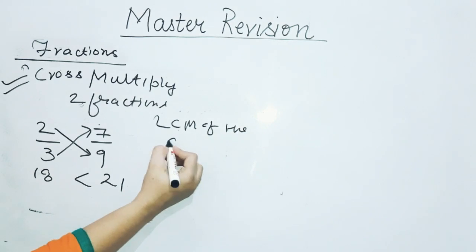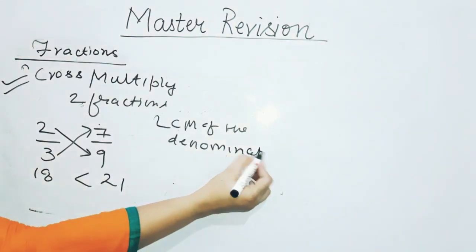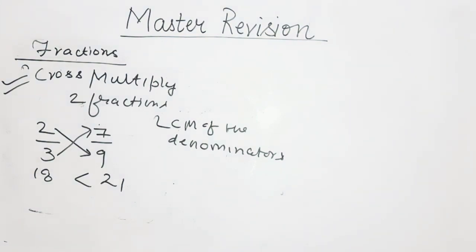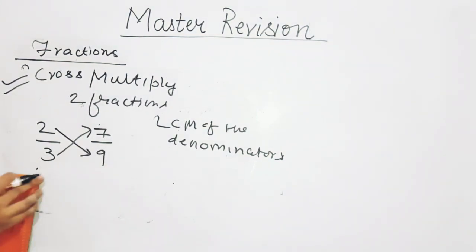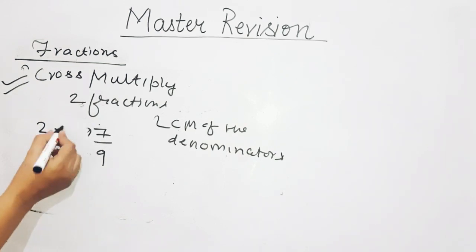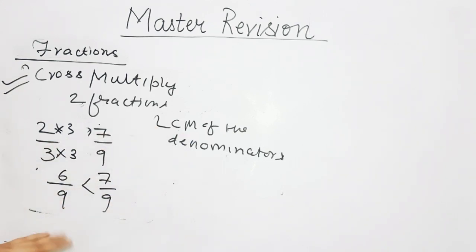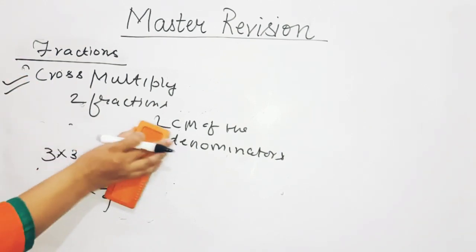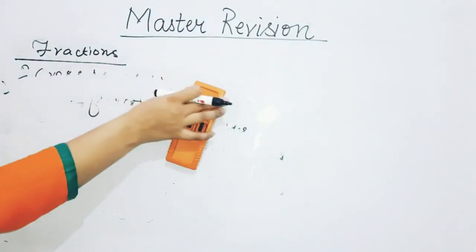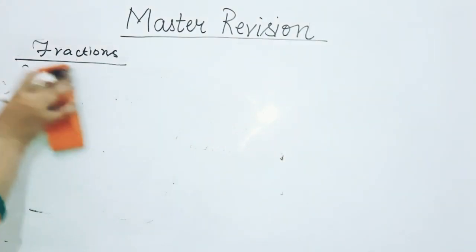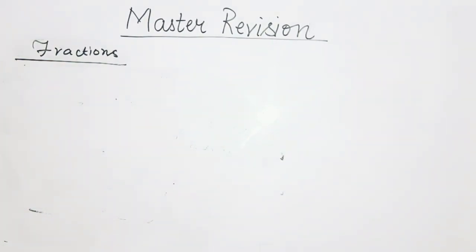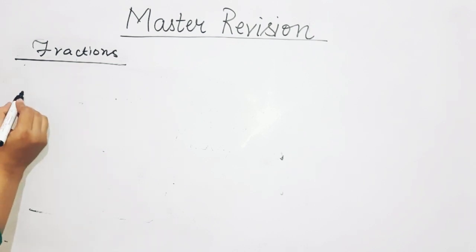Taking the LCM method: LCM of 3 and 9 is 9. Convert 2 upon 3 to 6 upon 9. Now compare 6 upon 9 and 7 upon 9 — clearly 7 upon 9 is greater. If you have more than 2 fractions, cross multiplication won't help; you must take the LCM of the denominators.